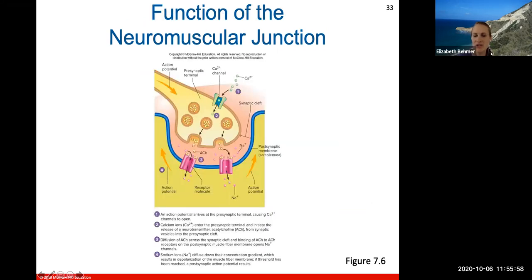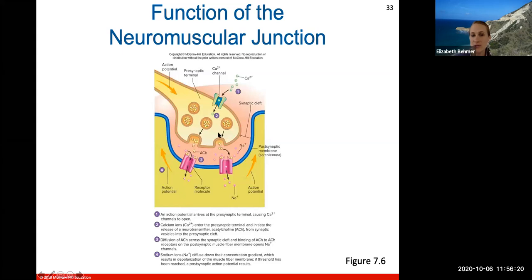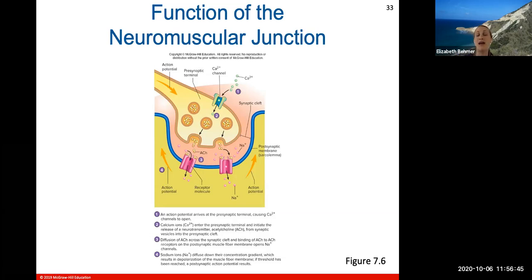At the neuromuscular junction, an action potential arrives at the pre-synaptic terminal causing calcium channels to open. Calcium ions enter and initiate release of acetylcholine from synaptic vesicles. Acetylcholine diffuses across the synaptic cleft and binds to receptors, causing sodium to enter the muscle cell. When sodium enters the muscle cell, that causes depolarization — the first step of an action potential. This is simply how we get a muscle stimulated by a nerve to begin an action potential.